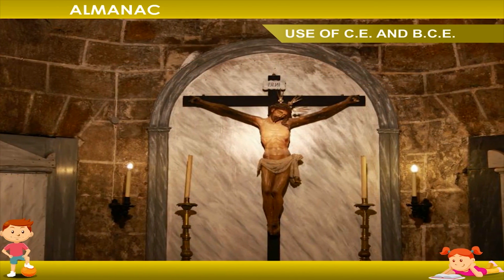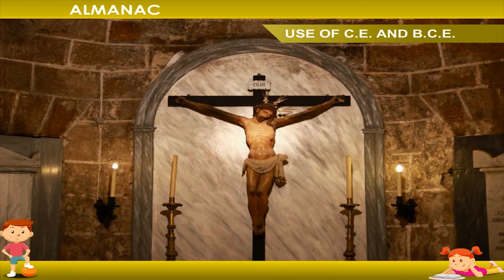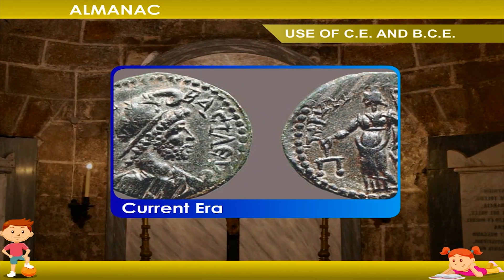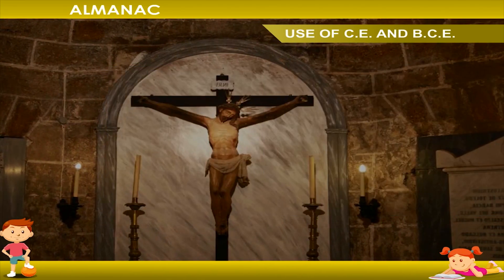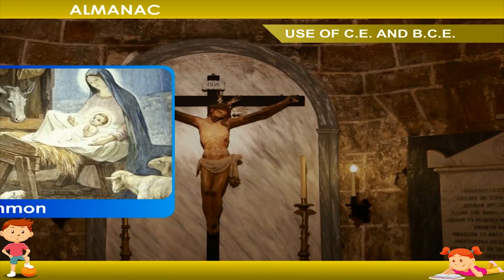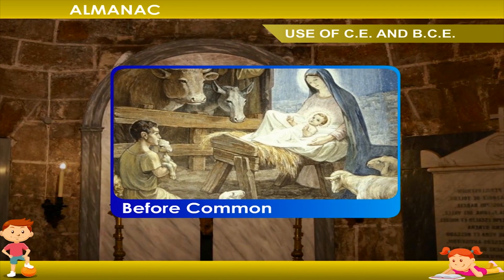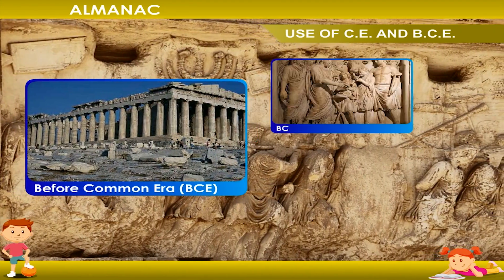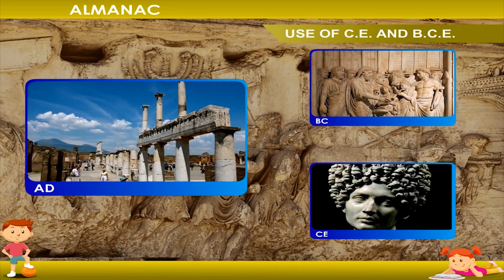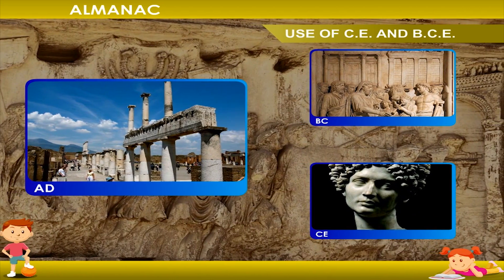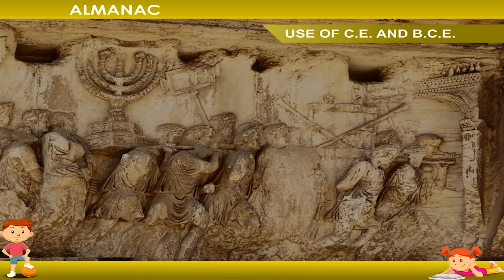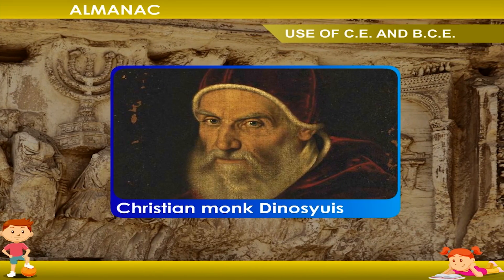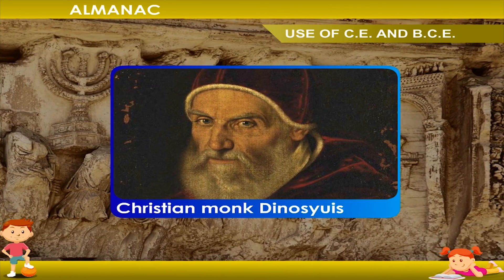CE in the timeline stands for Common Era, also called Current Era. It is an alternate name for the calendar era Anno Domini. BCE stands for Before the Common or Current Era. BCE is used in place of BC, and CE is used in place of AD. The word 'Common' in both these terms denotes the dates most commonly used by the Gregorian calendar. The year numbering of the Common Era was devised by the Christian monk Dionysius Exiguus in the year 525.